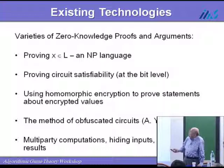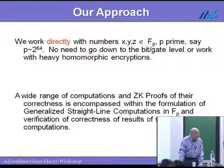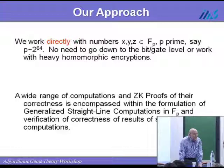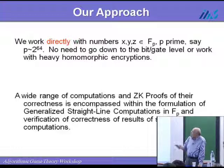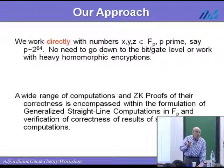Our approach — innovated four years ago at Harvard — instead of trying to translate the correctness proof into, say, graph three-colorability, which would be just impossible, we worked directly with numbers. The numbers that come into problems like that, and also into problems describing auctions, are in practice not very large. For example, we take a prime number which has about 64 digits.